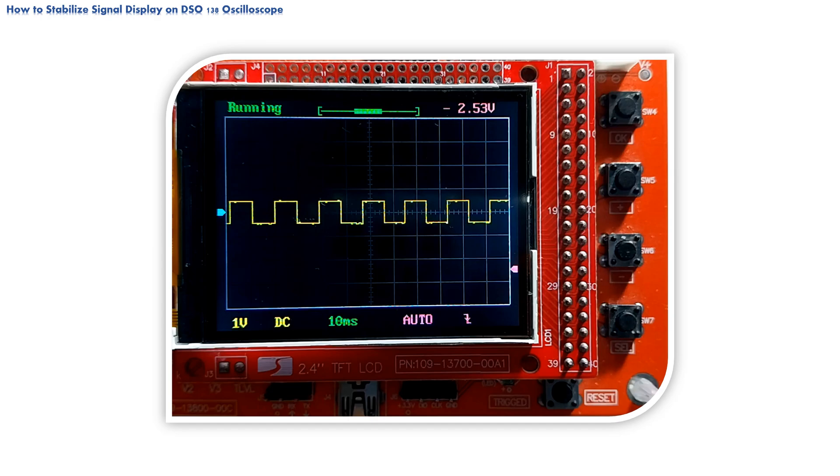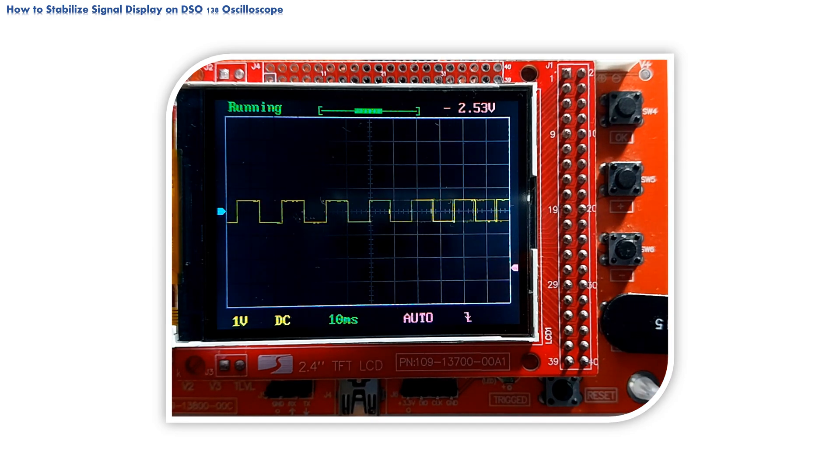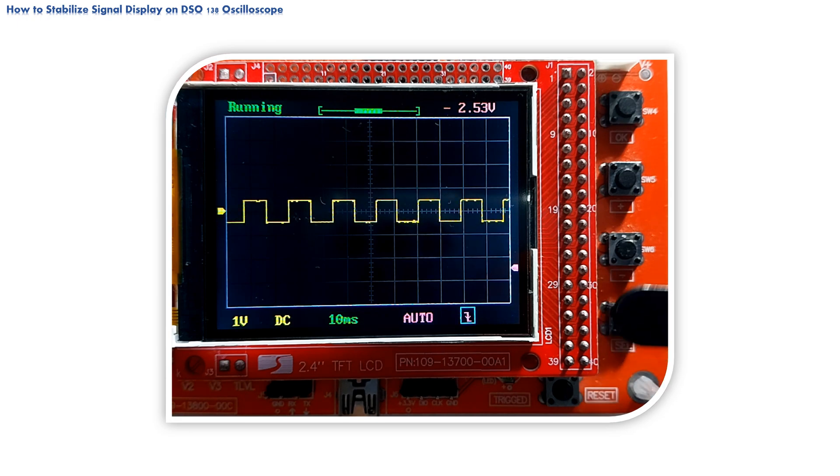First scenario is one in which we want to use rising part of the signal to initiate trigger event. So, by pushing cell button let's set focus on trigged icon, and use plus and minus push button to select option with arrow on the icon pointing up. Now, again, by using cell push button, let's set focus on arrow pointer on right-hand side of the screen.